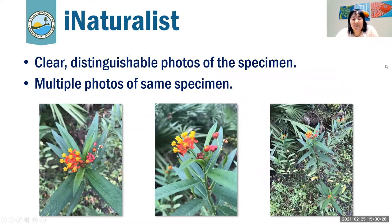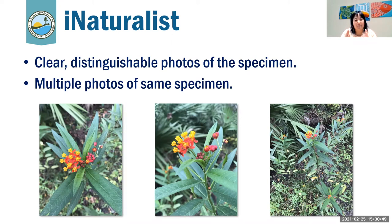What we recommend for your naturalist observations is taking clear, distinguishable photos of the specimen, which often includes multiple photos of the same specimen. On this slide you can see one close-up, one a little further back showing a different angle, and one with a wider view of the full plant itself. It just helps with additional identification suggestions and helps people confirm your observations.